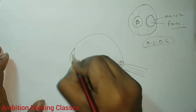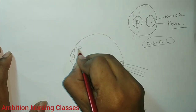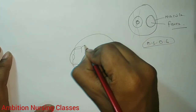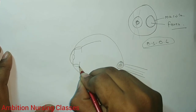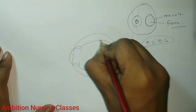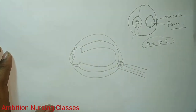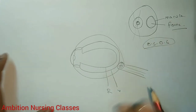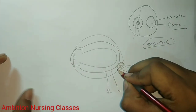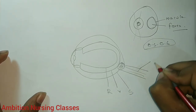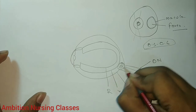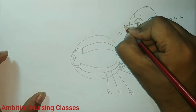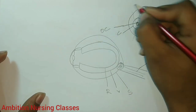So to recap: here is the iris, here is the pupil. You have the ciliary body, then your vascular coat, then your retina. The vascular coat is there to supply nutrition to the retina. Then you have the sclera, and this is where the optic nerve comes in.